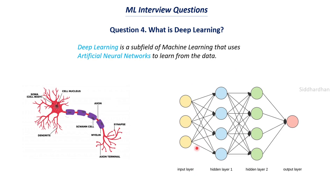In an artificial neural network, the first layer is the input layer where we give the dataset. The data is processed and moves on to the hidden layers — you can have multiple hidden layers with no particular limit. Finally, you have an output layer that tells you the final output, for example whether an image represents a human, dog, or cat. The neurons in the neural network are built based on our understanding of the neurons in our brain.